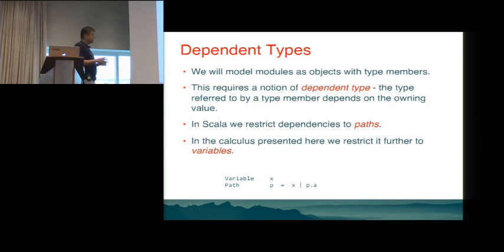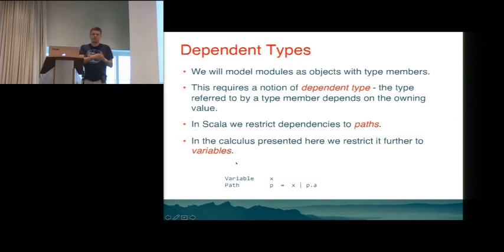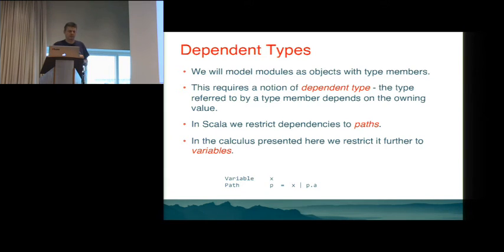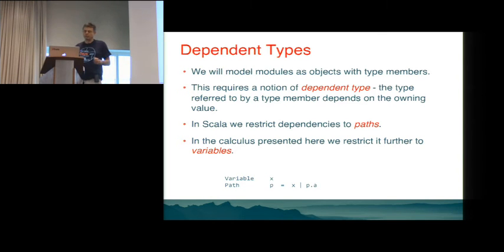The basis of our model is dependent types. We model modules as objects, and because modules can have type members, objects can have type members. That means we need a notion of a dependent type, because a type referring to a type member depends on the owning value — so object.type depends on the object. In Scala we restrict these dependencies to paths; in the calculus presented here, we restrict it further to variables.